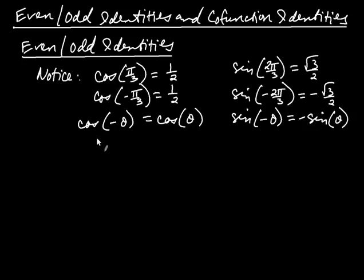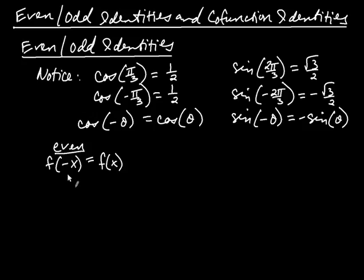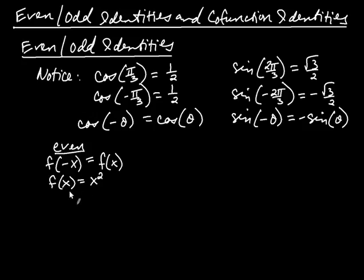In math, this is called even versus odd. When we say a function is even, we mean that f of negative x is equal to f of x. The classic example of an even function is x squared — when you plug in negative x, you get x squared, which is just f of x. So changing x to negative made no difference for the output.